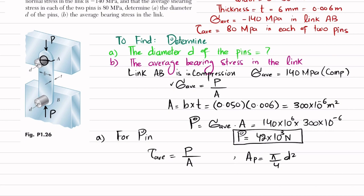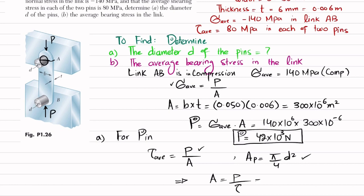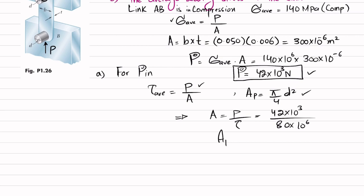The diameter of the pin is not given. The area of the pin equals pi over 4 times d squared. We know that average shearing stress is P divided by A, so from here we get A equals P divided by shear stress. P is 42 times 10 to the power 3, which we calculated earlier, divided by shearing stress which is 80 megapascal, that is 80 times 10 to the power 6. When you calculate, the area of the pin equals 525 times 10 to the power minus 6 square meter.